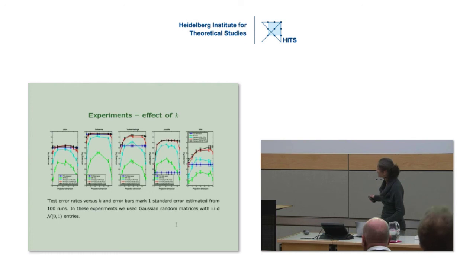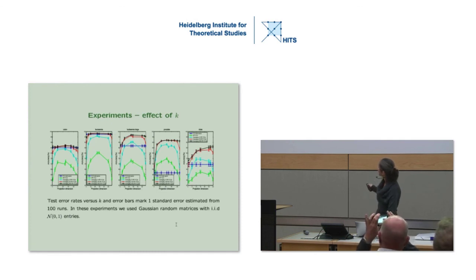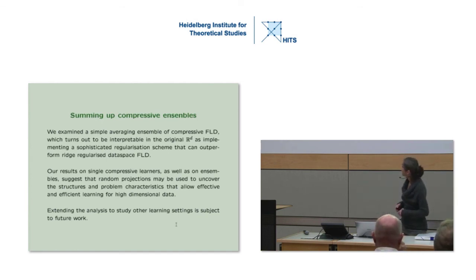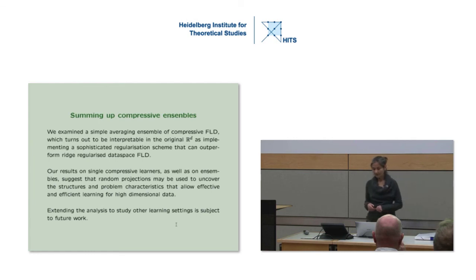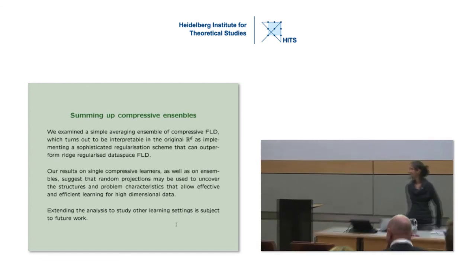To sum up: simple averaging ensembles analyzed in detail show why and when random projection helps classification. We have seen that label flipping probability is the central quantity both for the compressive setting and the original data space. To extend this to other learning settings, further work is needed. Thank you very much.